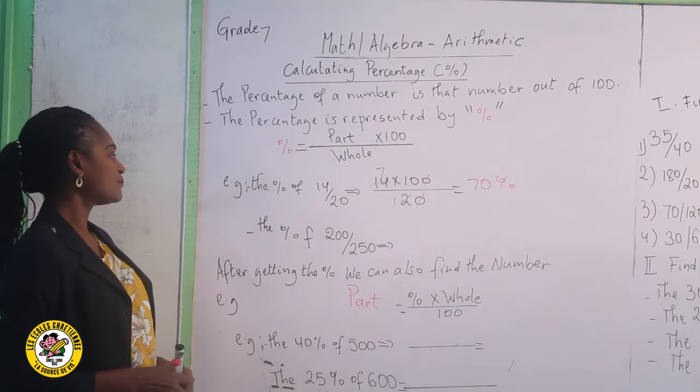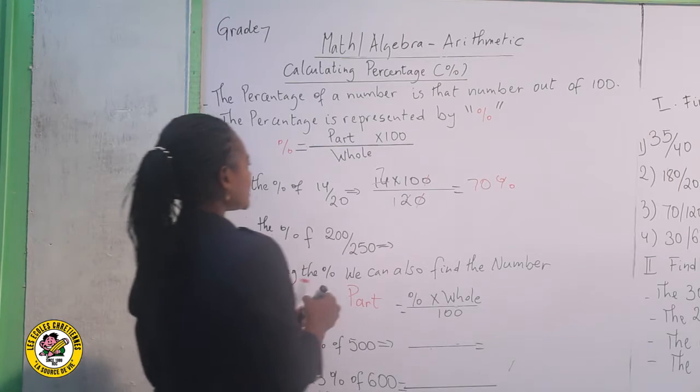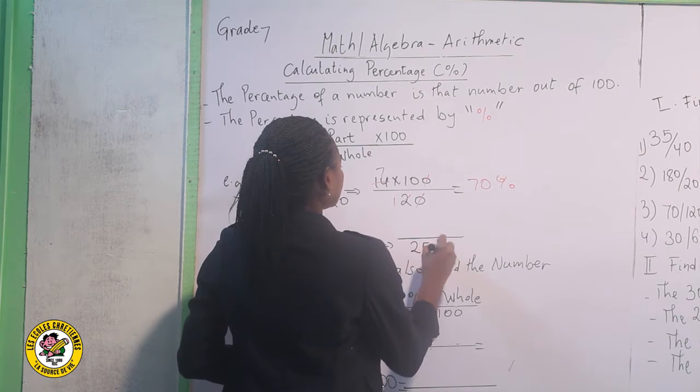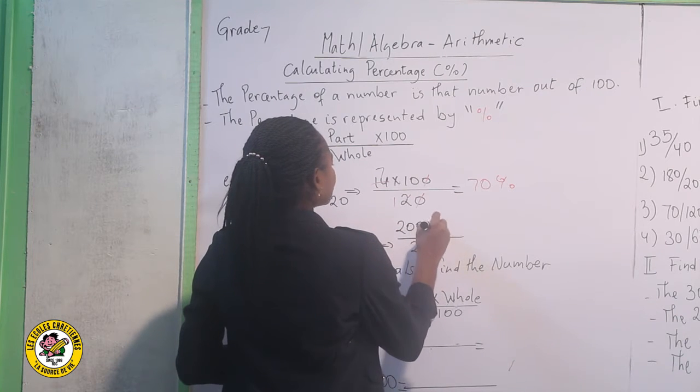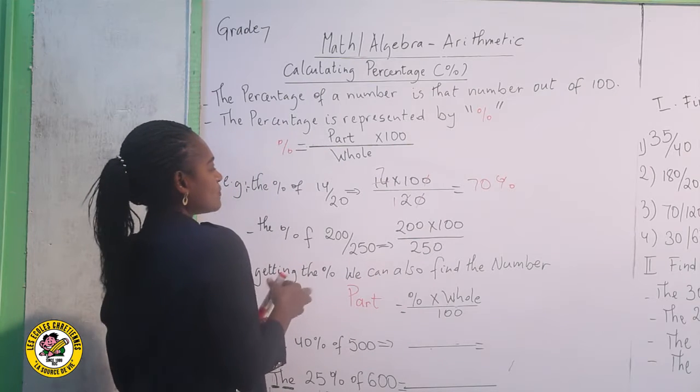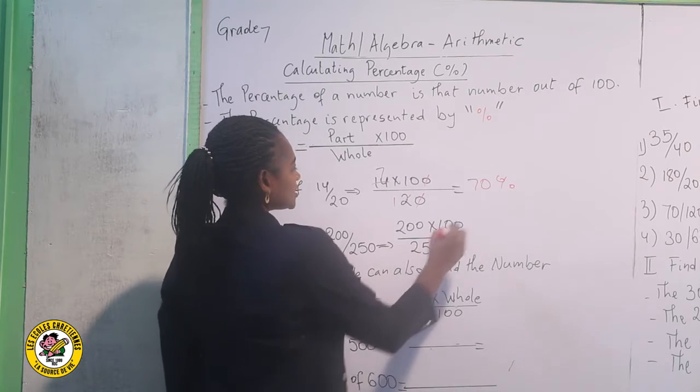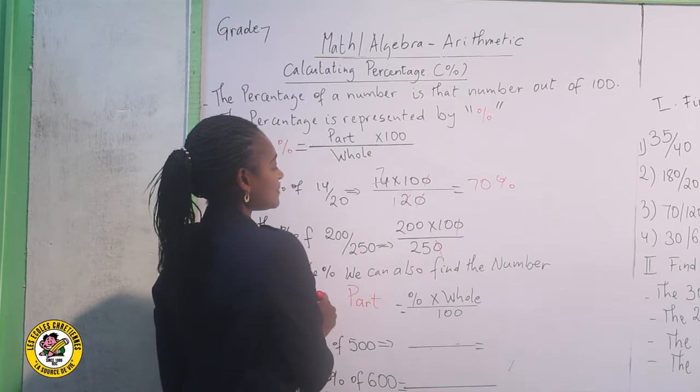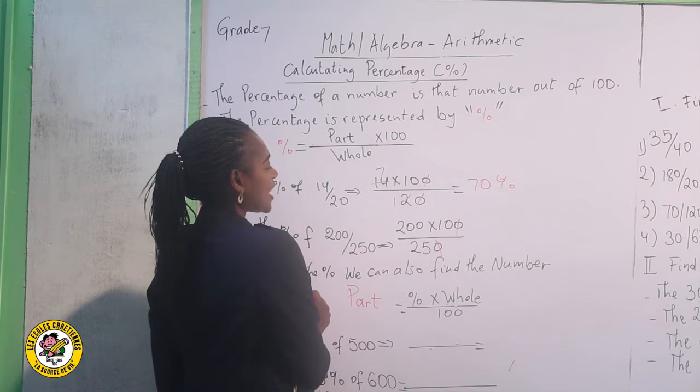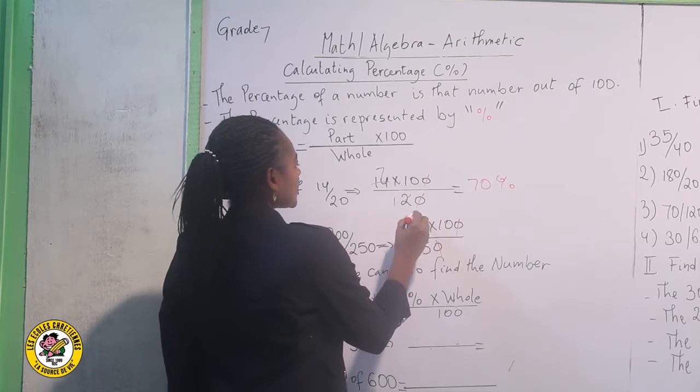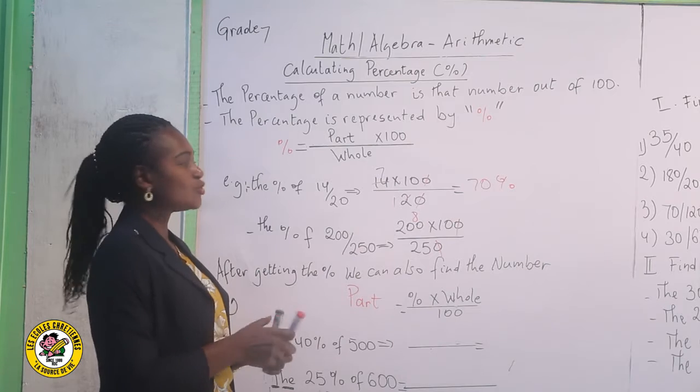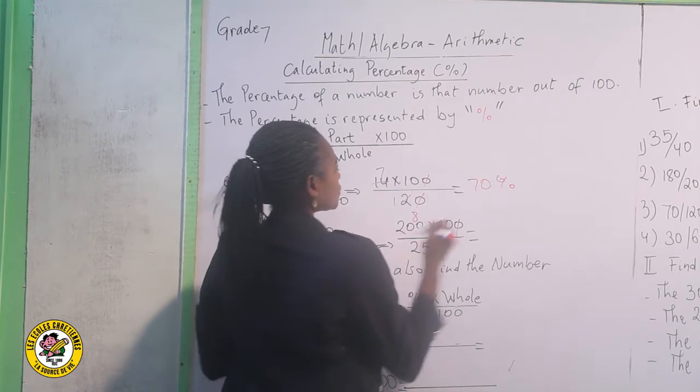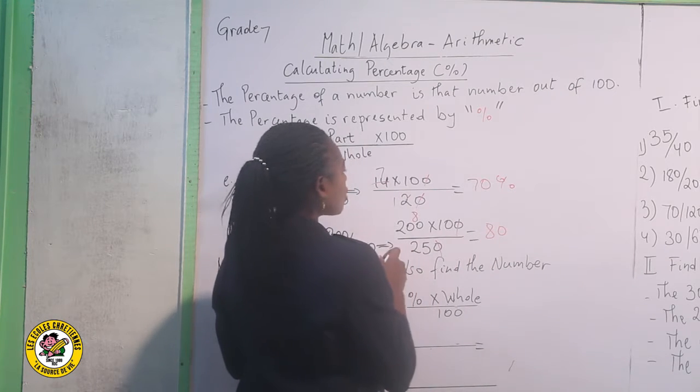200 over 250. We are going to do it the same way. The whole is 250. We are going to find the percentage of 200. We are going to simplify it to make it easy. We simplify zero with zero. 200 will be simplified to 2, 250 to 25. This will give us 8. 8 times 10. This means that the percentage of this number equals 80%. So here the student got 80%.